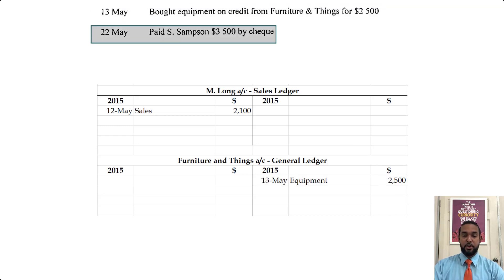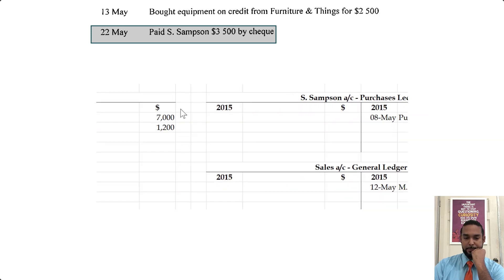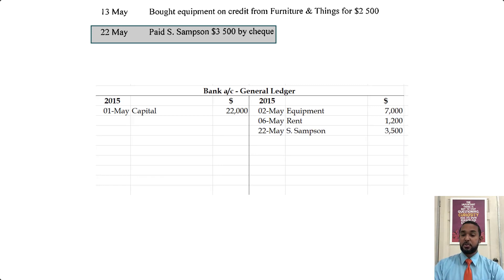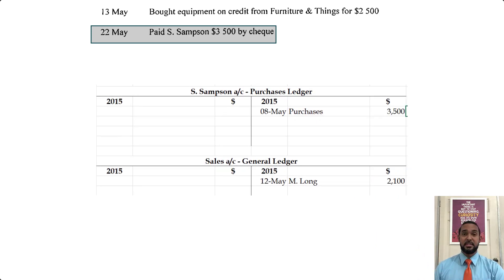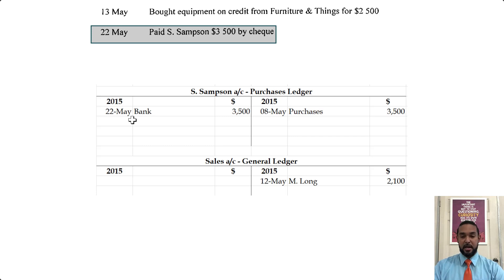Paid Samson $3,500 by check. Money is coming out of bank — bank is an asset, if the asset is decreasing you credit the bank account. Samson is a creditor — we owe Samson money for the credit purchases. When you pay Samson, you are reducing the amount of money you owe, thereby reducing your liability, which requires a debit. So you credit where it's coming from — bank — and debit where it's going — Samson.